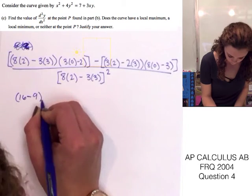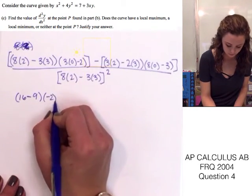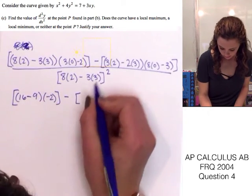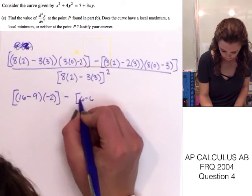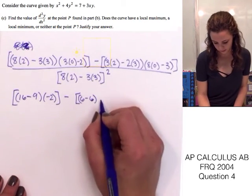So 8 times 2 is 16 minus 3 times 3, which is 9, which is multiplied by 0 minus 2, which is negative 2. And then the second one, we have 6 minus 6, which is 0.